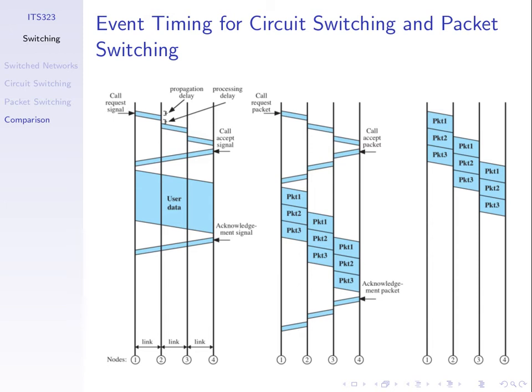With circuit switching, once we've finished transferring the data, we send back an acknowledgement signal saying we're finished — disconnect. This tells nodes three and two to remove everything regarding this connection. If more data needs to go from node one to node four, they'll need to set up the circuit again.